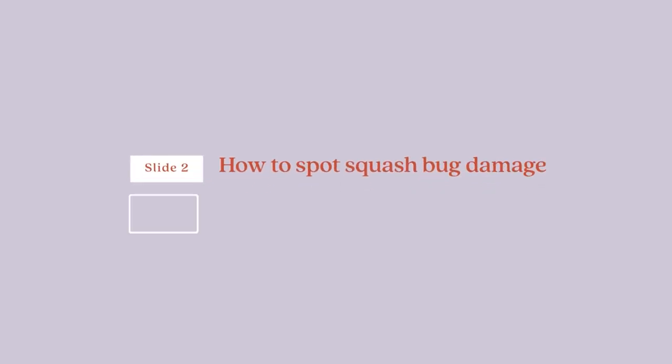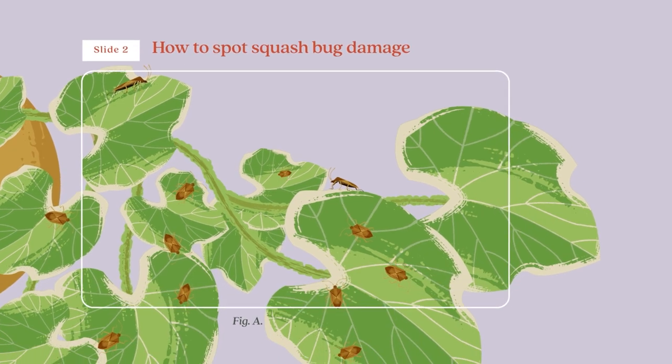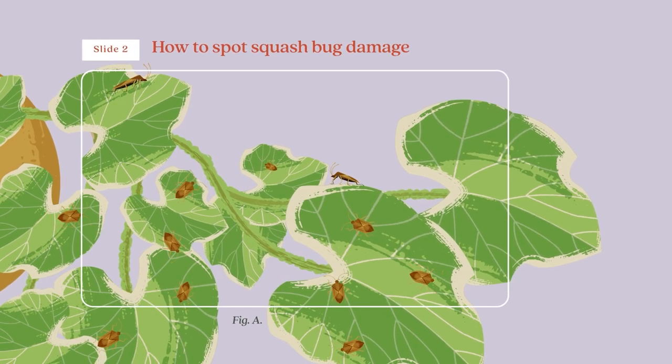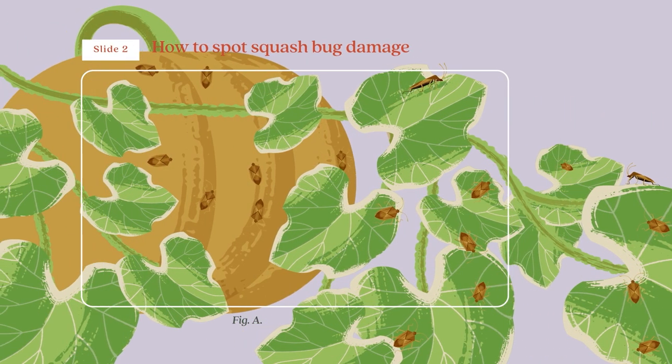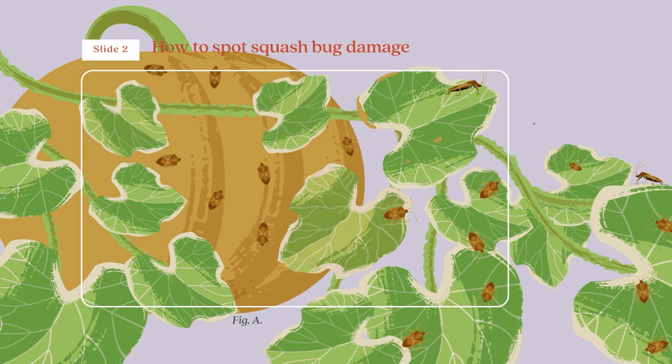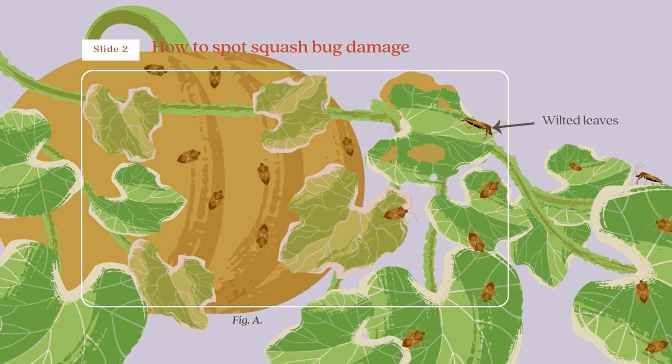How to spot squash bug damage. In springtime, they feed on leaves and vines, then move on to the squash and pumpkins themselves, causing leaves and stems to wilt and collapse.